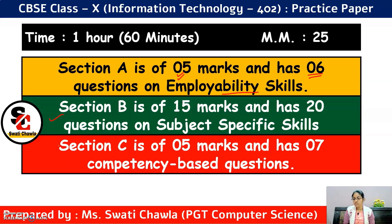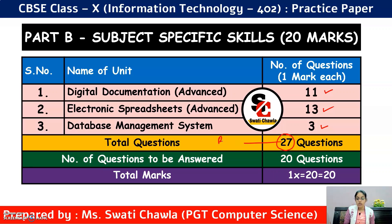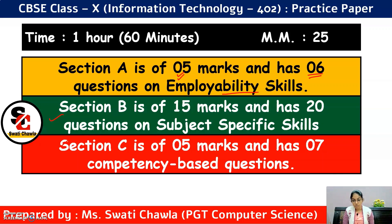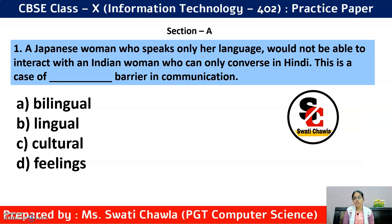Section B and Section C will be from subject-specific skills. Section B covers: Digital Documentation (11 questions), Electronic Spreadsheet (13 questions), and Database Management System (3 questions) — total 27 questions combined in Section B and C. From Section B you have 20 questions, attempt any 15. Section C has 7 questions, attempt any 5. Now let's start with our first question of Section A, from employability skills.